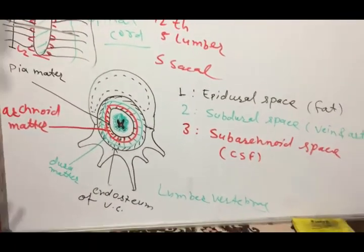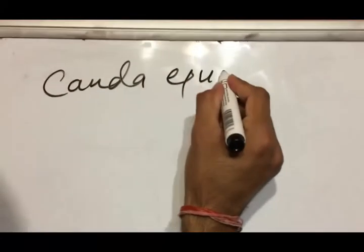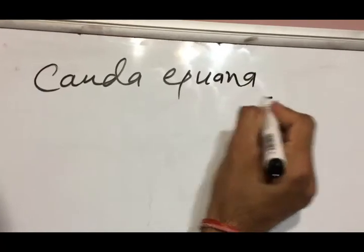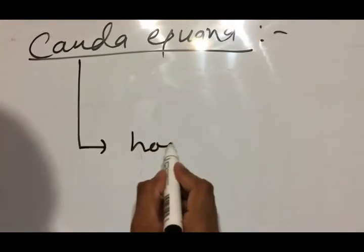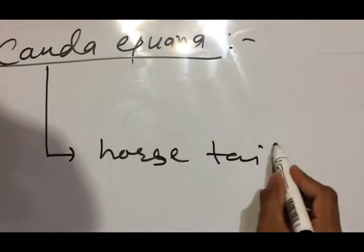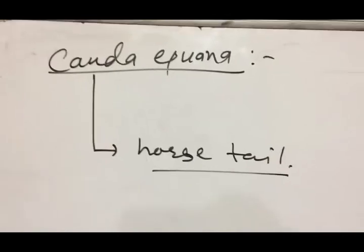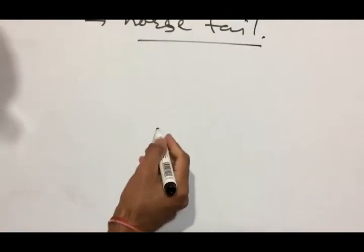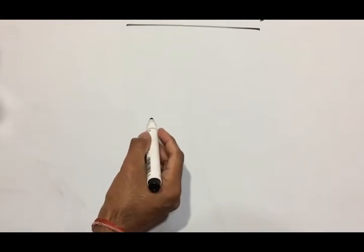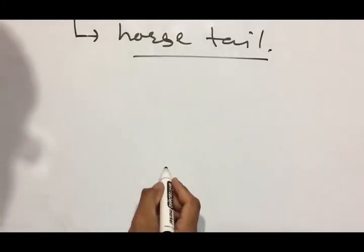Next is the cauda equina. What is the cauda equina? Cauda equina means horse tail — it looks like a horse's tail. I am drawing another diagram of the lumbar vertebra to help understand the cauda equina.